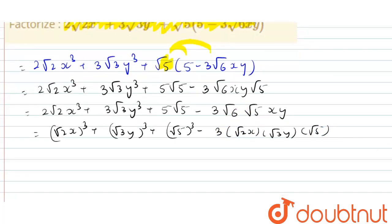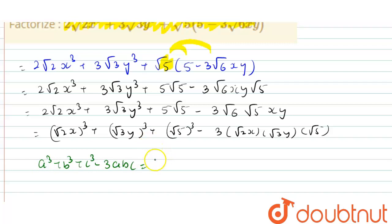This is according to the formula: a³ + b³ + c³ - 3abc, which is equal to (a + b + c)(a² + b² + c² - ab - bc - ca).